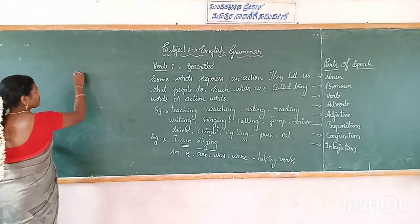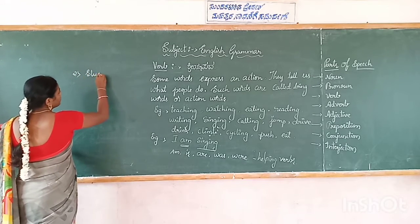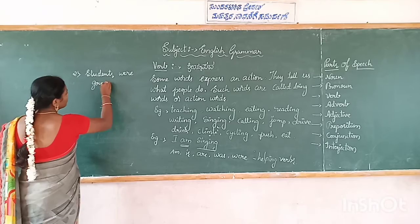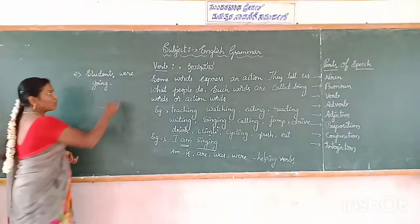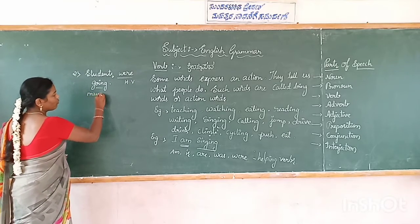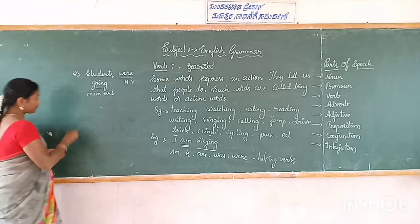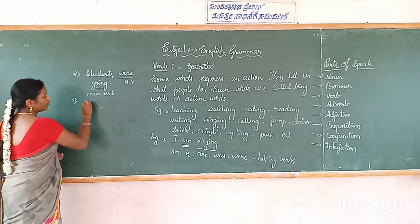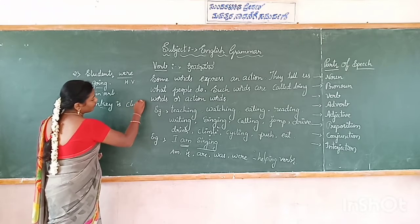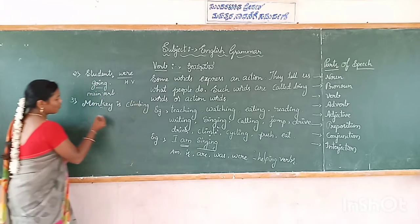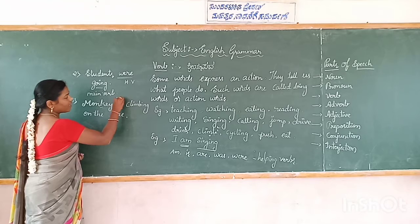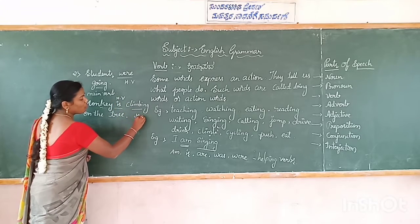Second sentence: Student was going. In this sentence 'was' is a helping verb and 'going' is a main verb. Third sentence: Monkey is climbing on the tree. In this sentence 'is' is a helping verb and 'climbing' is a main verb.